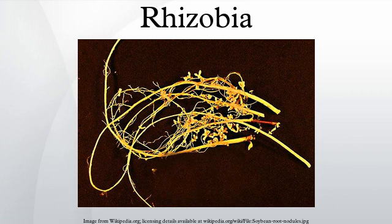The legume-Rhizobia symbiosis is a classic example of mutualism. Rhizobia supply ammonia or amino acids to the plant and in return receive organic acids as a carbon and energy source, but its evolutionary persistence is actually somewhat surprising. Because several unrelated strains infect each individual plant, any one strain could redirect resources from nitrogen fixation to its own reproduction without killing the host plant upon which they all depend. But this form of cheating should be equally tempting for all strains — a classic tragedy of the commons.